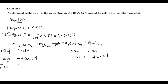After dissociation, the remaining acetic acid concentration is 0.01 − 4.2 × 10⁻⁴ = 9.58 × 10⁻³ molar. The acetate ion and hydrogen ion concentrations are each 4.2 × 10⁻⁴ molar.